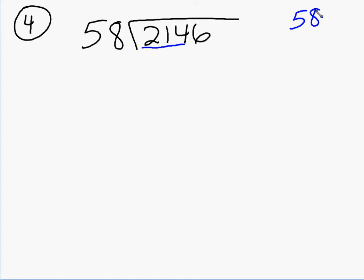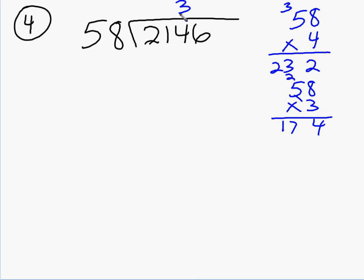So we come over to the side and we try some things. We try 58 times 4. 4 times 8 is 32. Carry a 3. 232 is too big. So I need to try 58 times 3. 3 times 8 is 24. Carry a 2. 3 times 5 is 15 plus 2 is 174. That will work. So I put the 3 above the 4. And I know that 3 times 58 is 174. So I write that there. And now I subtract. 4 minus 4 is 0. I need to borrow. Make that a 1 and that an 11. 11 minus 7 is 4. So I have 40. I need to bring down this 6.